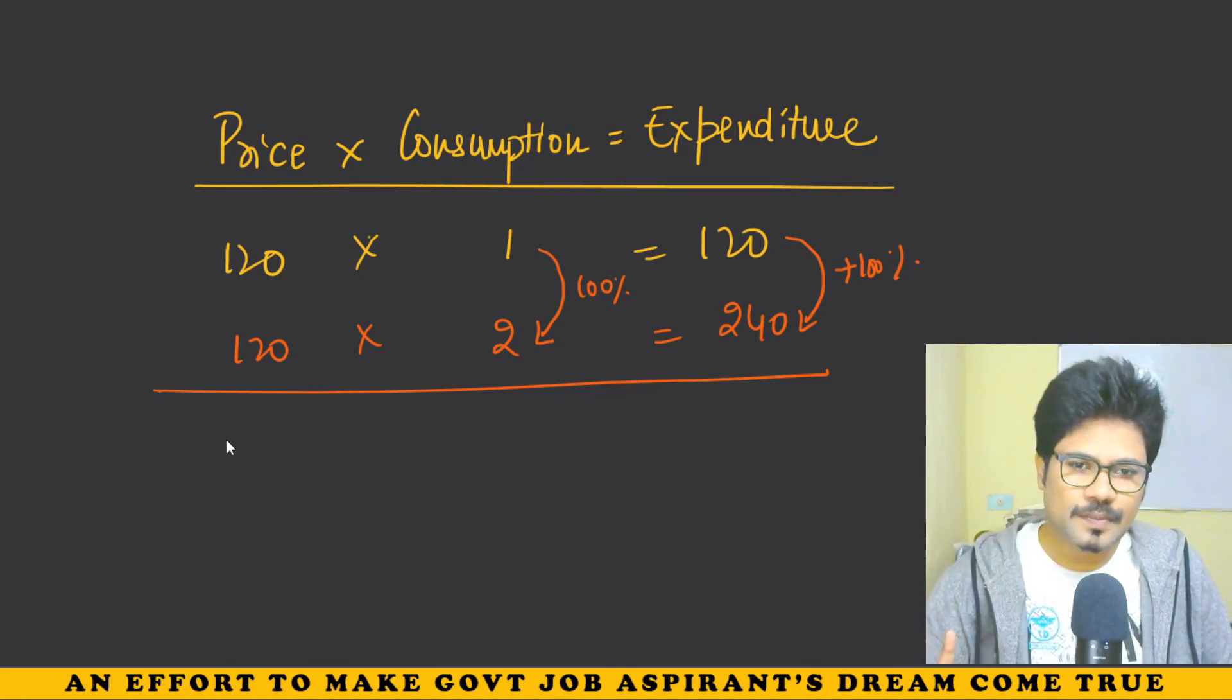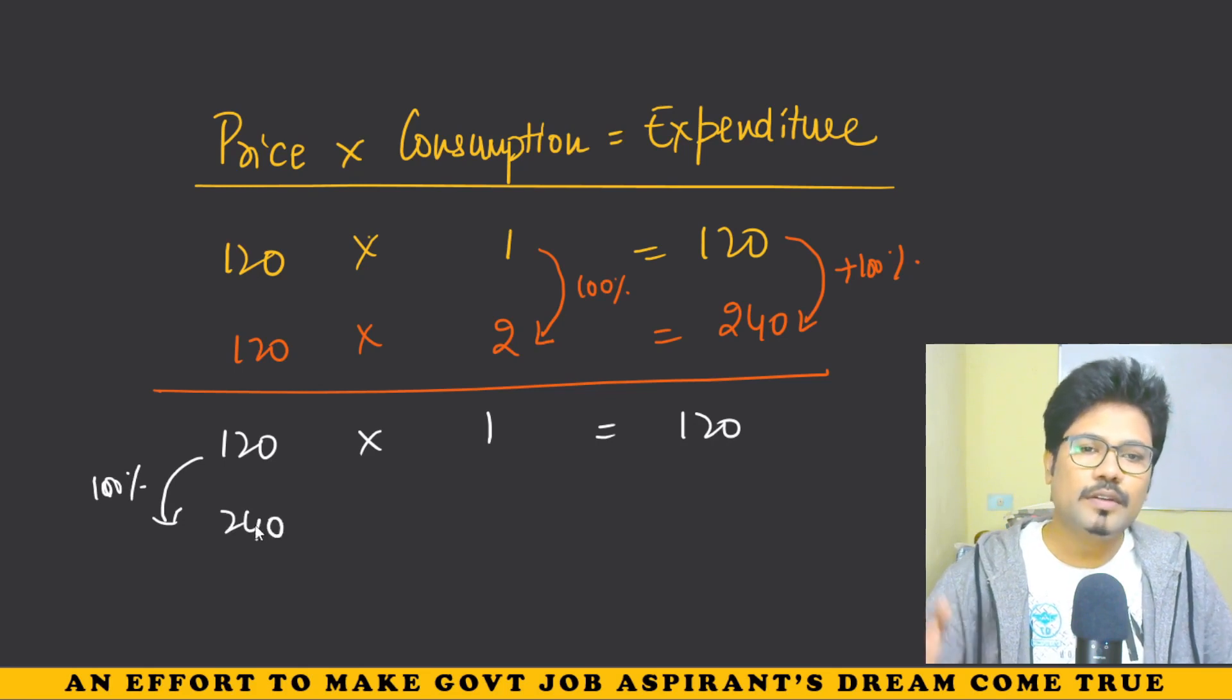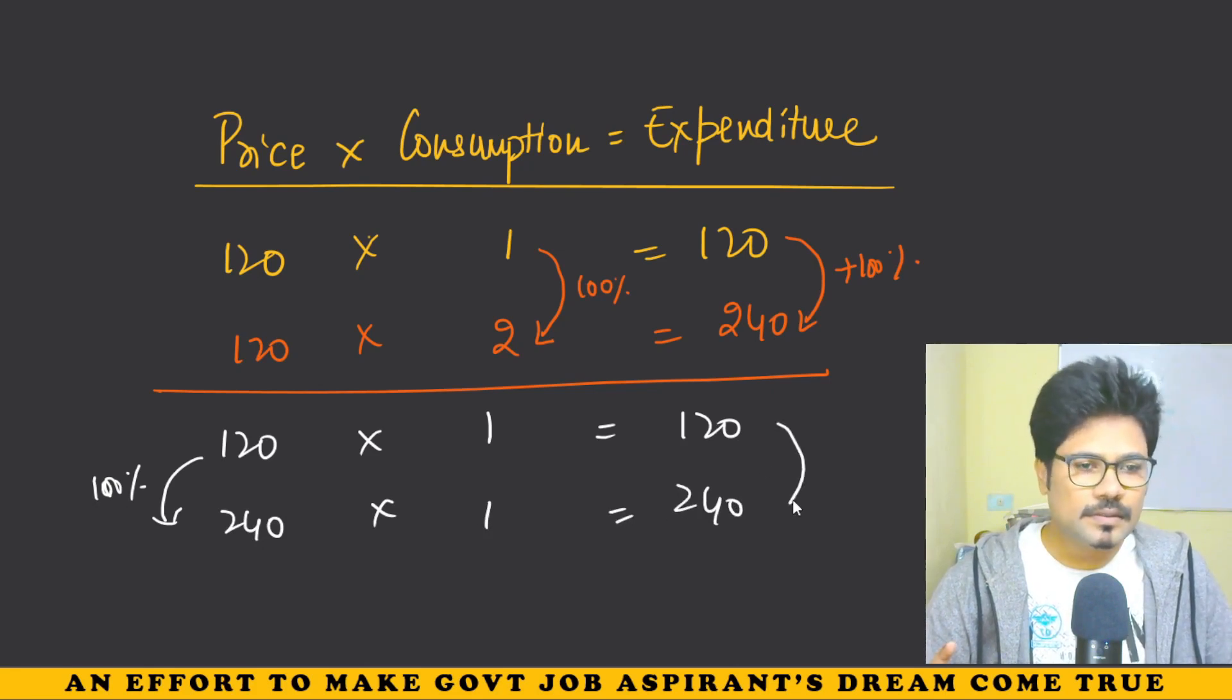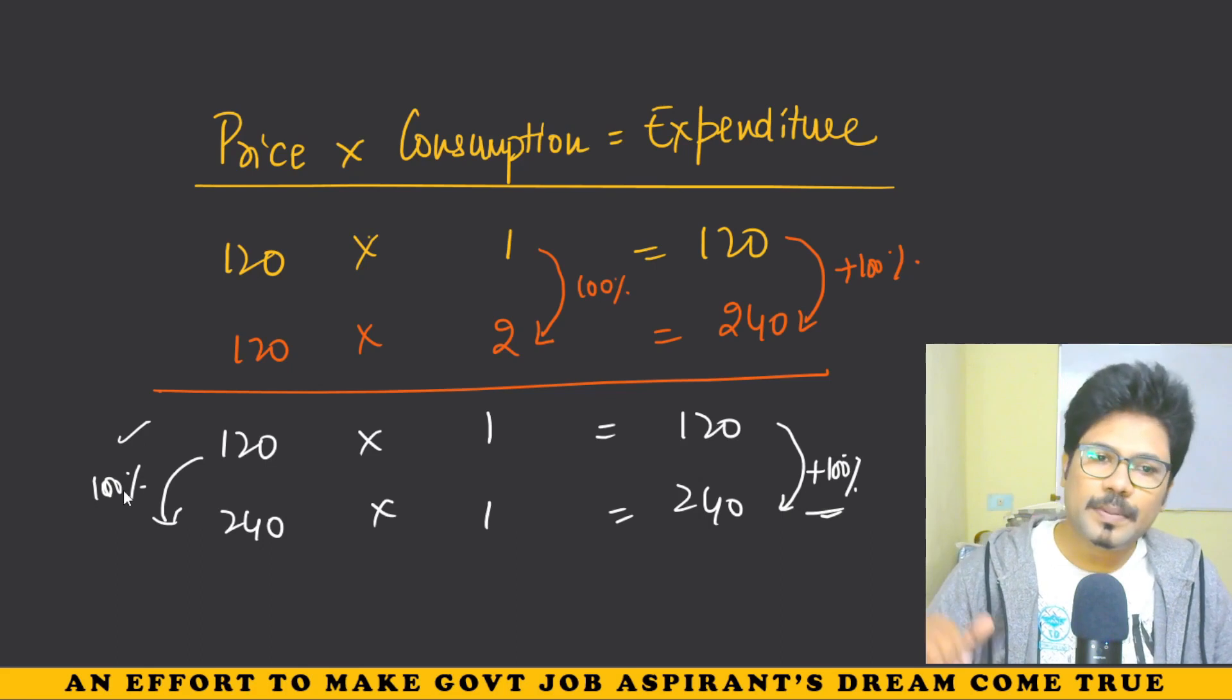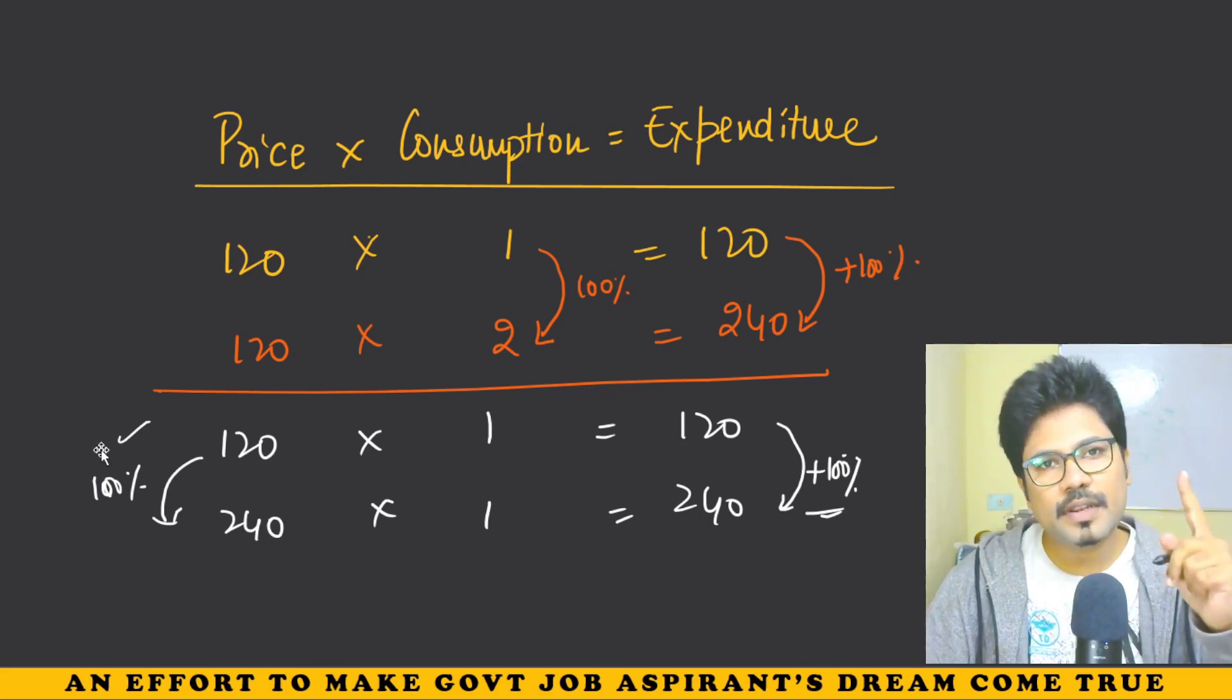Basic price is 120 rupees for one item. Now price increases 100% due to inflation. So 120 rupees doubles to 240 rupees. Expenditure also increases 100%. This is also dependent on price. As price increases, expenditure also increases, provided consumption remains constant.